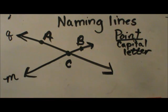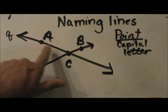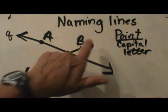The other way, what we are going to talk about now is how to name lines. I have two lines drawn up here. I have this one right here and I have this one right here.